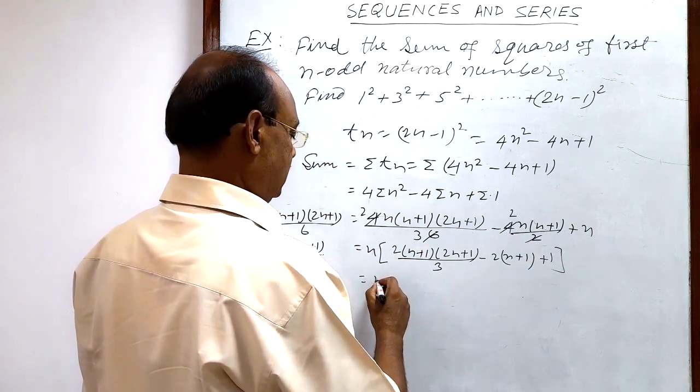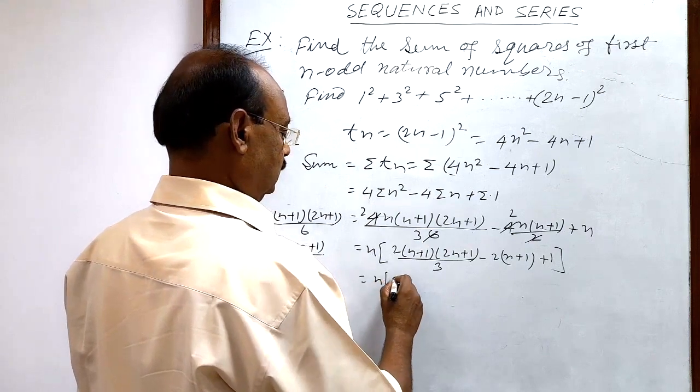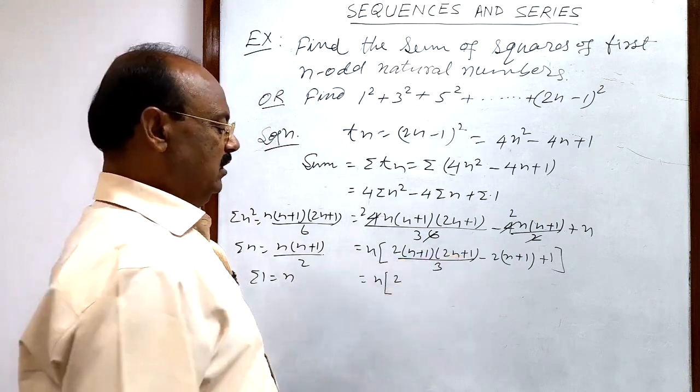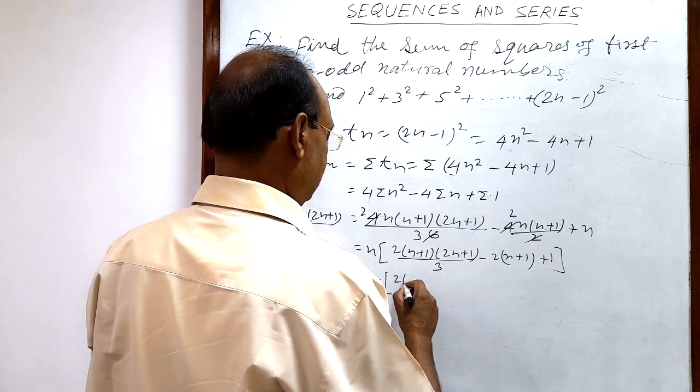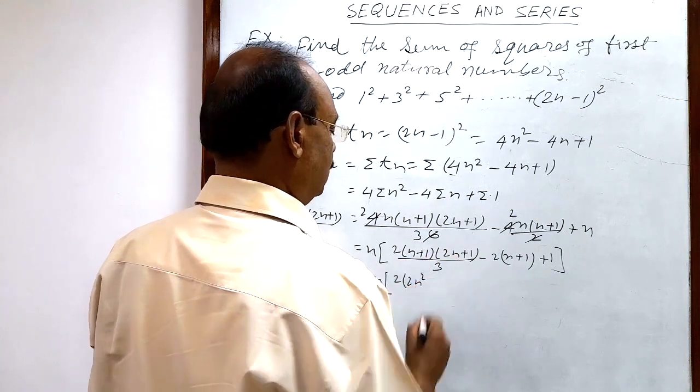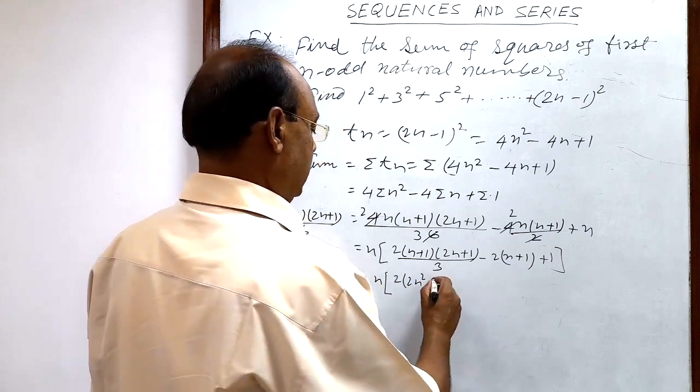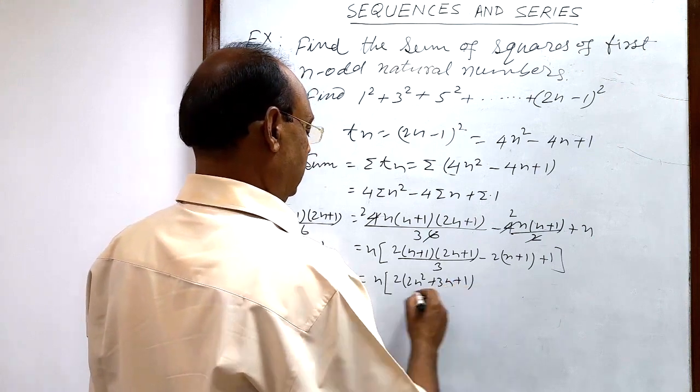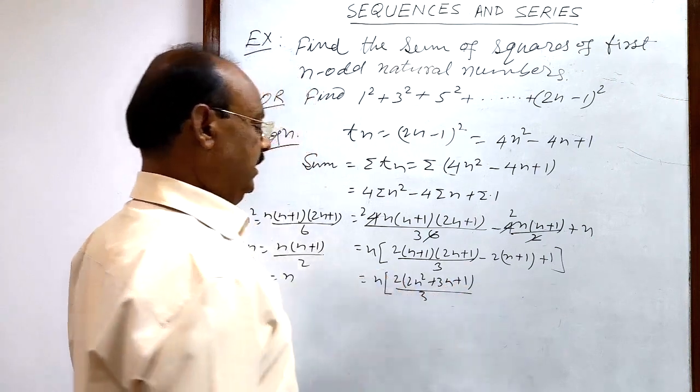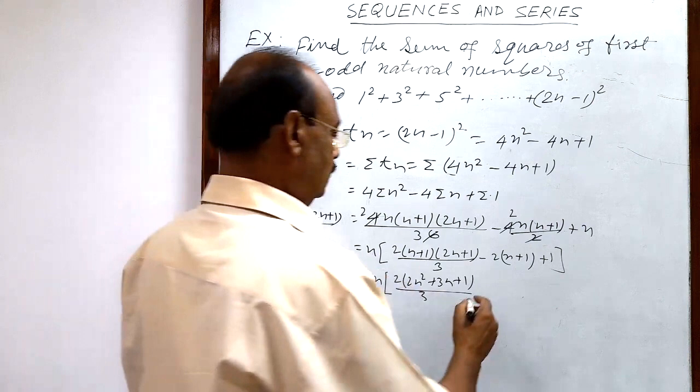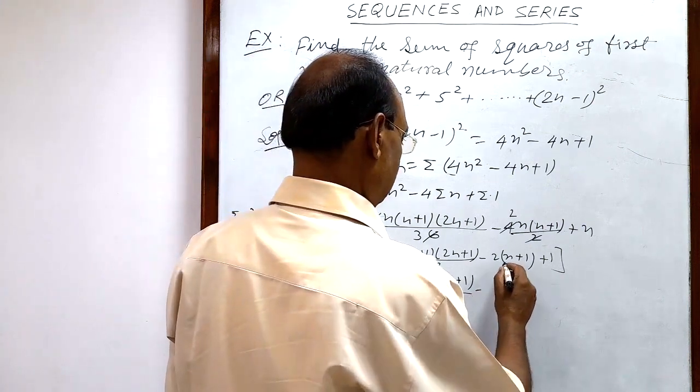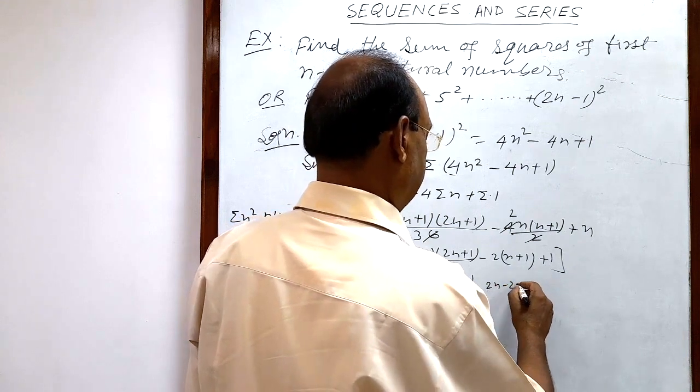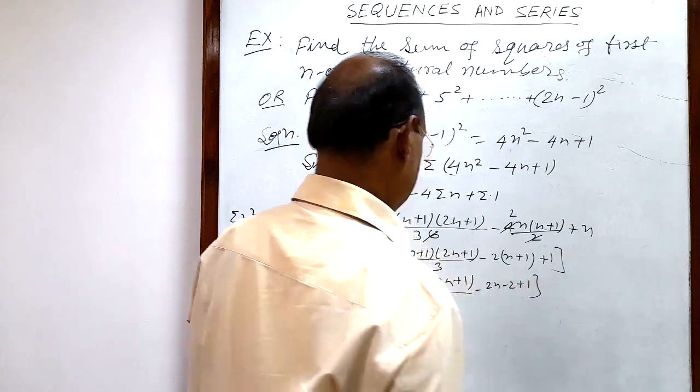So this is n × 2(n+1)(n+1) which will be equal to how much? This is (2n² + 3n + 3n + 1)/3. And this is -2n - 2 and +1.